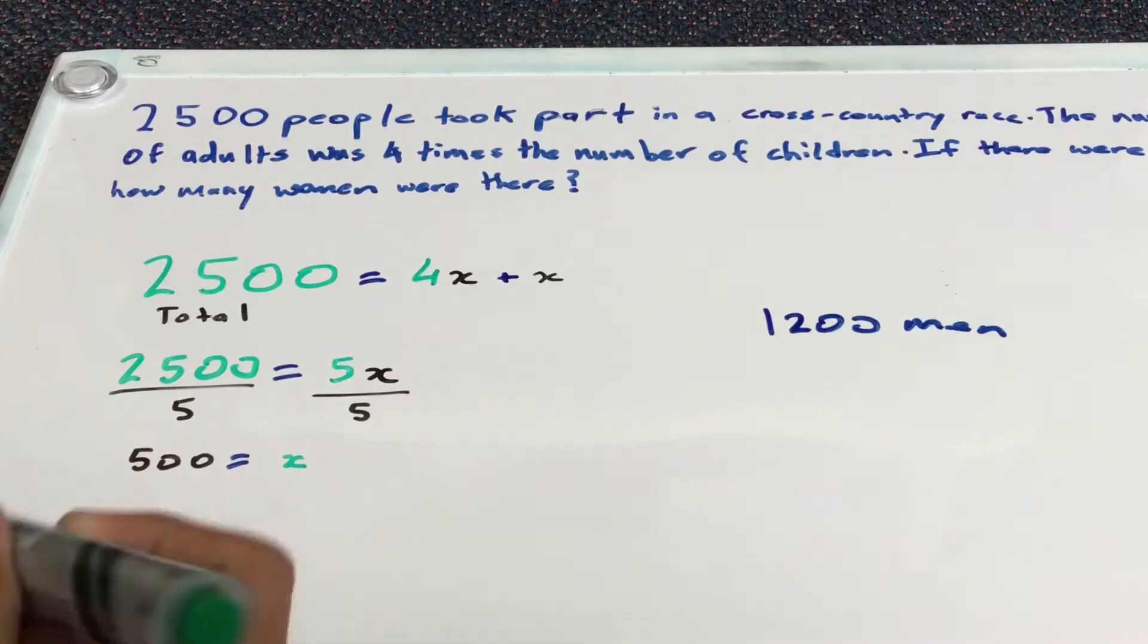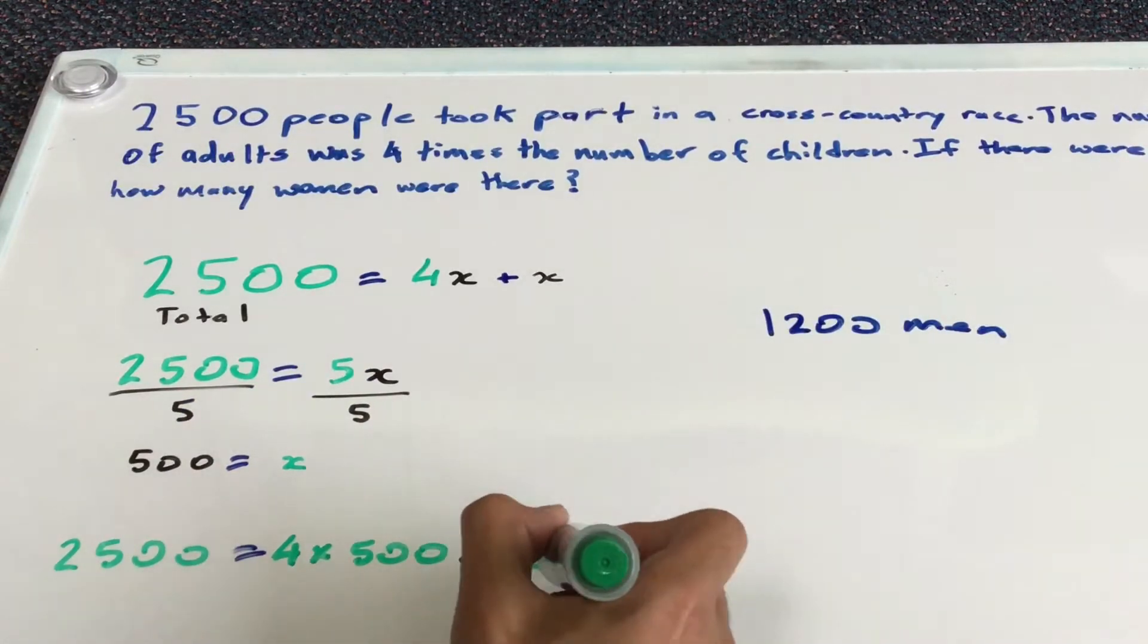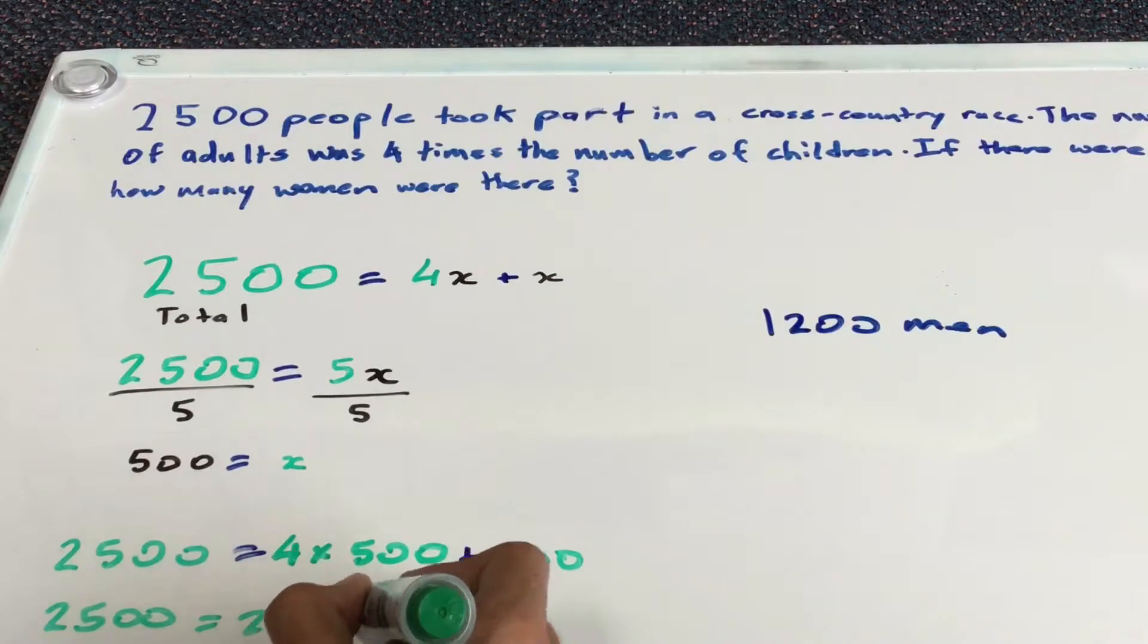So by doing this, we're going to substitute our value of x equals 500. We're going to substitute 500 into every x, and then we'll find out the total number of adults and the total number of children, which we can then use to find the total number of women. So 4 times x, which we know is 500, times 500, and then we're going to add 500. And you should get a result of 2,500, and that means that both the left-hand side and the right-hand side are equal.